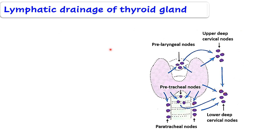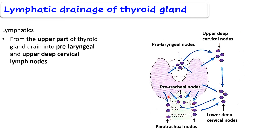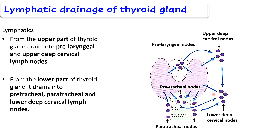Lymphatic drainage of the thyroid gland is straightforward. From the upper part of the gland, lymph drains either directly into the upper deep cervical group of lymph nodes — which lie along the internal jugular vein — or first into prelaryngeal nodes and then into the upper deep cervical nodes. From the lower part of the thyroid gland, lymph drains either directly into the lower deep cervical group or first into the pretracheal and paratracheal lymph nodes, and from there into the lower deep cervical nodes. Ultimately, all drainage leads to the deep cervical group of lymph nodes.